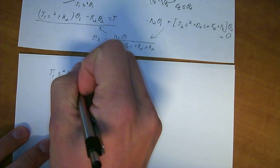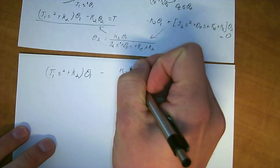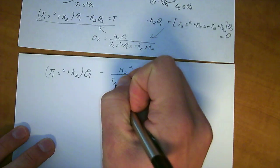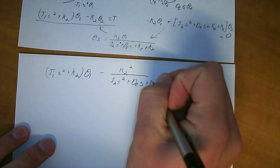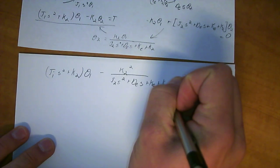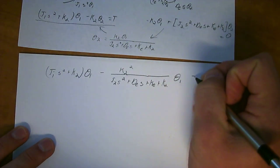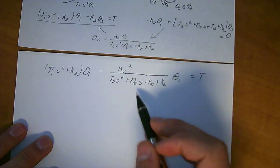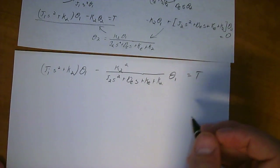So we've got, subbing that in, we've got J1 S squared plus K2 times Theta1, minus K2 squared all over J2 S squared plus D S plus KB plus K2, times Theta1, is equal to T. So now we have T and Theta1 related to each other and we can get the transfer function directly from this.